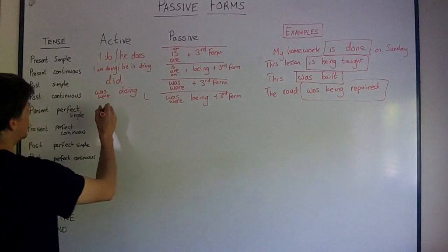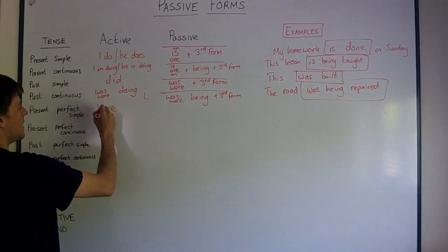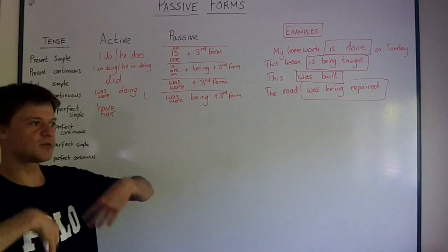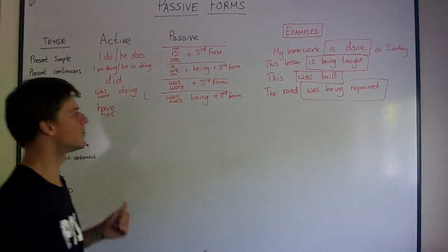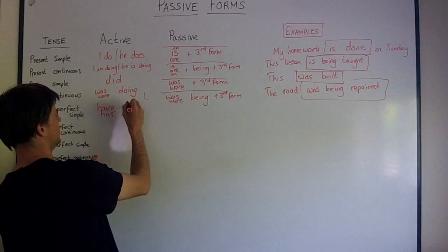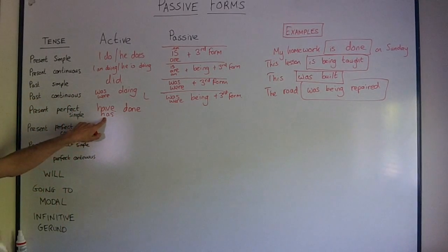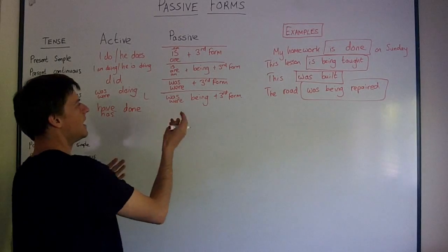Present perfect simple now. Remember we use present perfect simple for past actions with present results. For example, I have done my homework. I have done my homework. So have or has done. He has done his homework. Use has for he or she.